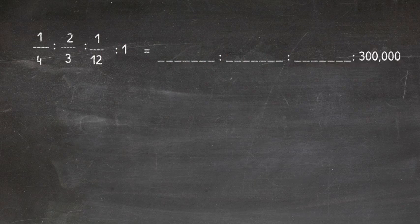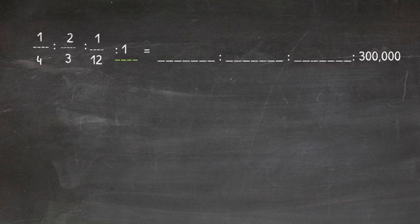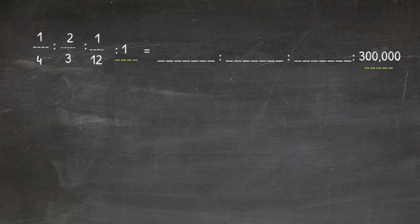We will be using equivalent ratios to solve this proportion. One-quarter to two-thirds to one-twelfth to one is equal to something to something to something to 300,000. We know that our whole is 300,000. So now we need to look at the scale factor. How can we get from one to 300,000?